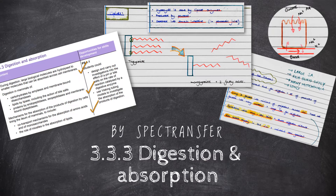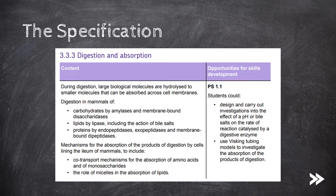Welcome to Spec Transfer. Today we'll be looking at topic 3.3.3, Digestion and Absorption, from the AQA A-level biology specification. As always, let's start by taking a look at our specification. It begins with an introduction to digestion, then moving on to the digestion of carbohydrates, lipids including the action of bile salts, and the digestion of proteins. We also need to know the mechanisms by which the different products of digestion are absorbed.